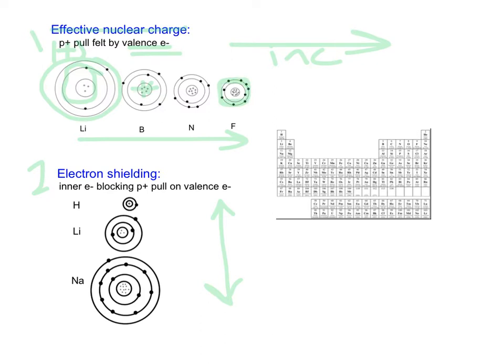That's why you see the size of an atom decreases as you go across the periodic table, because the pull from the nucleus is increasing with the addition of protons. This will also explain ionization energy — it's much harder to remove an electron from an element on the right side of the periodic table, because there's a tighter grip on those outer electrons from the pull of the nucleus.